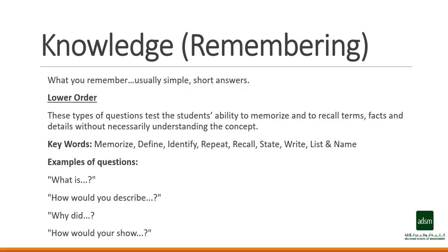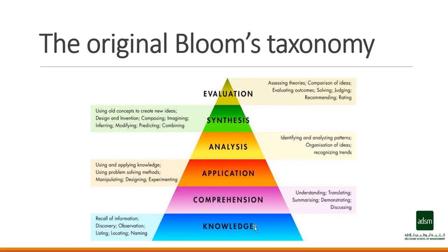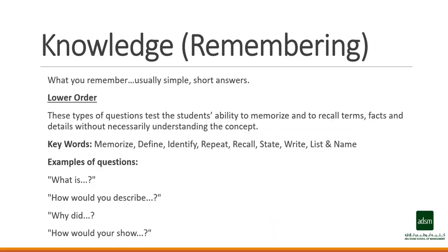As shown on Bloom's Taxonomy, we are now at Level 1, which is about recall of information — the lower order of thinking. In remembering, it is just the basic thing about how you can recall the information, repeat it, write it, or list it. On this basis you can make up questions that will test the understanding of students at the remembering level.